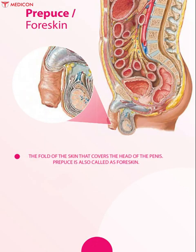Prepuce is the fold of skin that covers the head of the penis, which is also known as the foreskin.